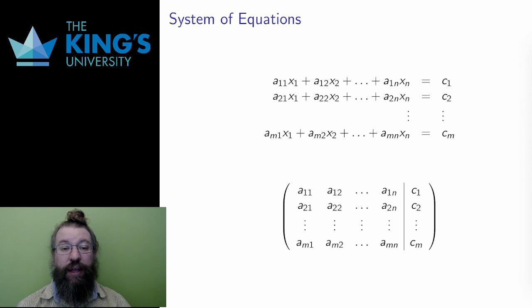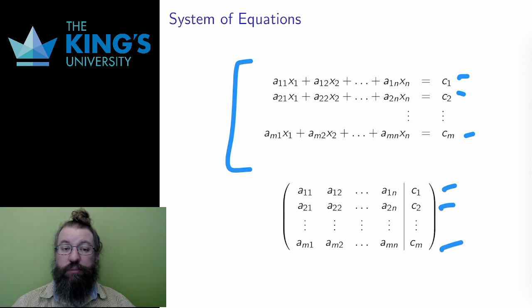If I have a system, here is the process for transferring the system into a matrix. Each equation of the system becomes a row of the matrix. I take the constants, but not the variables of the system, row by row.